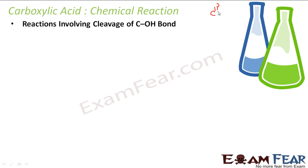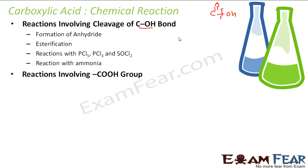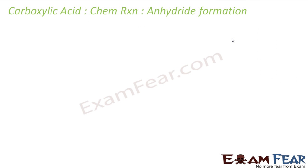In one case this bond breaks — this is what I'm talking about. We'll talk about the formation of anhydride, esterification, reaction with PCl5, PCl3, SOCl2, reaction with ammonia, and then reactions involving the C-OH group altogether. We'll talk about reduction, decarboxylation, substitution reactions in the hydrocarbon part, halogenation, and ring substitution.